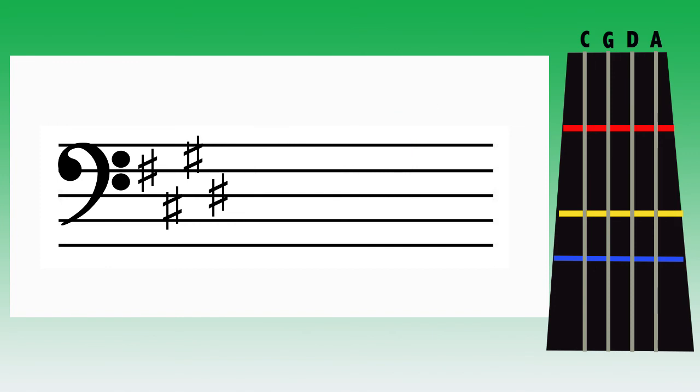So remember, in order to use forward extension D sharp, there need to be 4 or more sharps in the key signature. If there are fewer than 4 sharps, use D natural.